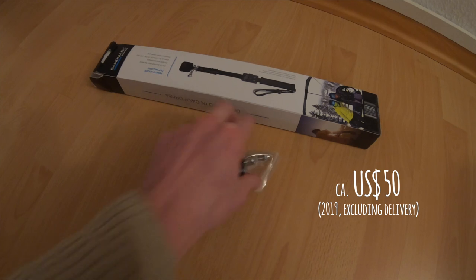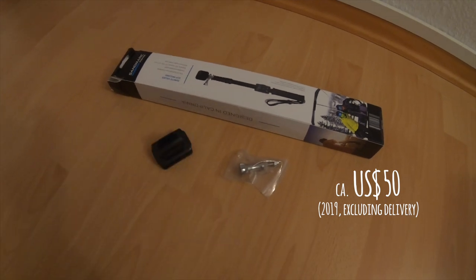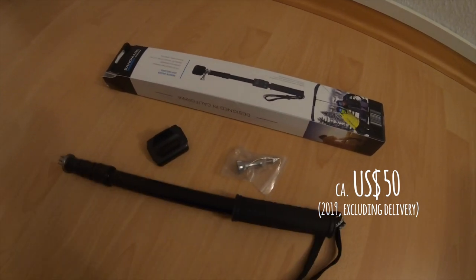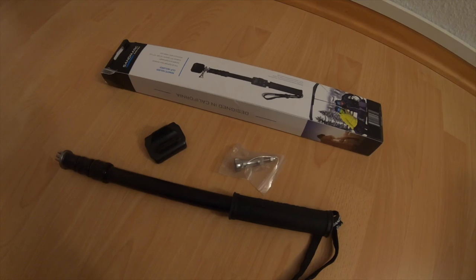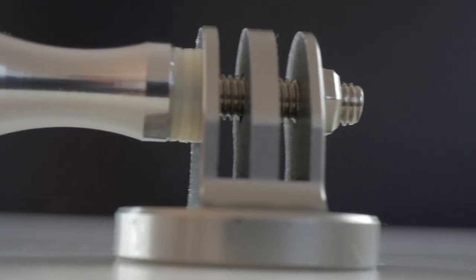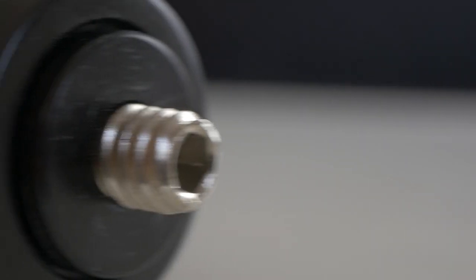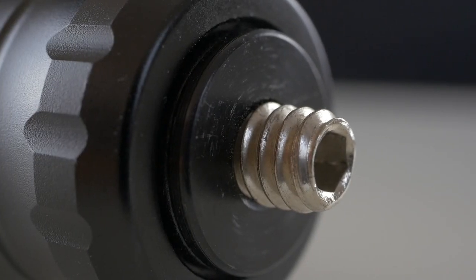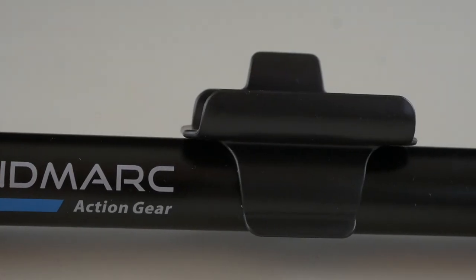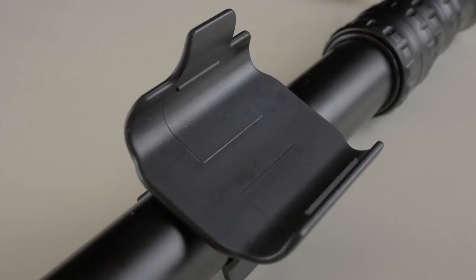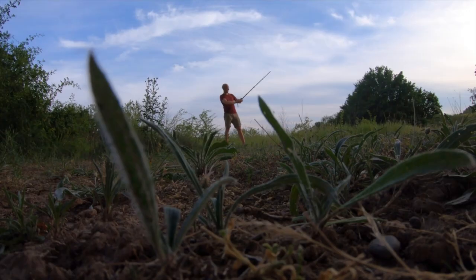It included an aluminum tripod mount for the GoPro and the selfie stick with a rubber grip and an adjustable wrist strap. The metal GoPro mount is mounted on the screw on the top of the stick, and it also comes with a remote holder for the GoPro. Let's take a look at all the other specifications and features of the selfie stick.